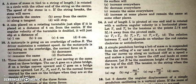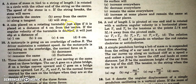A stone of mass m is tied to a string of length l and rotated in a circle with the other end of the string at the center. The speed of the stone is v. If the string breaks, the stone will obviously move along the tangent, because there will be no centripetal force, so it will move in a straight line along its velocity which is always tangential.